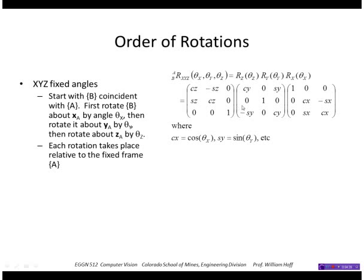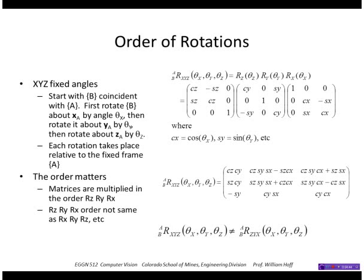We saw that the form of the rotation matrix was the product of these three individual matrices. So this is the convention we're going to be using. And as I showed in that MATLAB example, the order does matter. You don't get the same rotation matrix if you multiply them in a different order.